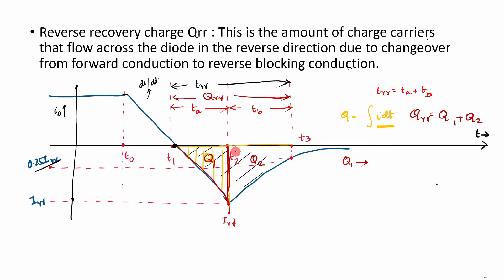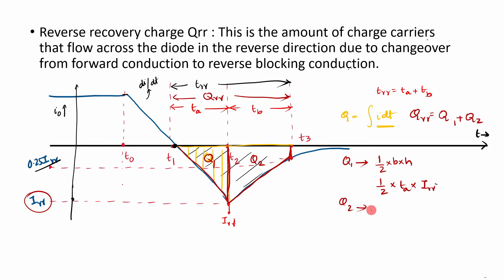Q1 can be found by finding this area, which is clearly a right-angle triangle. So Q1 equals half times base times height. The base is ta and the height is the current value IRR. So Q1 equals half times ta times IRR. Similarly, Q2 is the area in the second region — we approximate it as a right-angle triangle as well. So Q2 equals half times base times height, where the base is tb and the height is IRR. So Q2 equals half times tb times IRR.